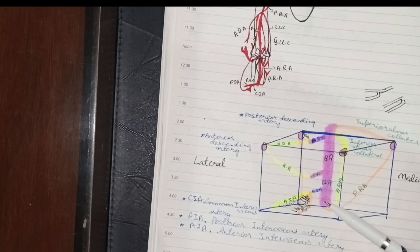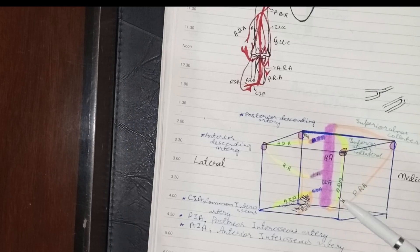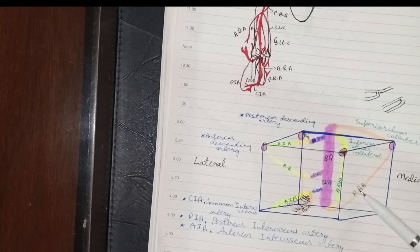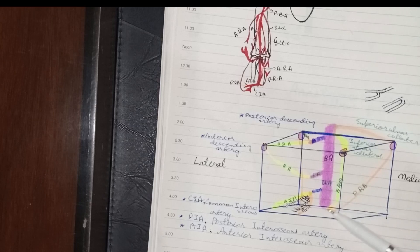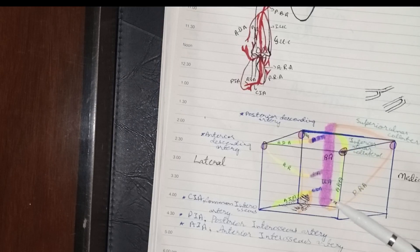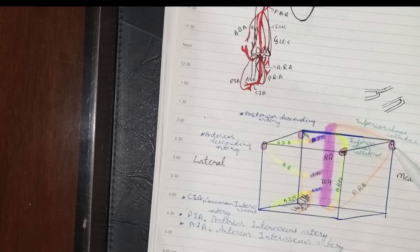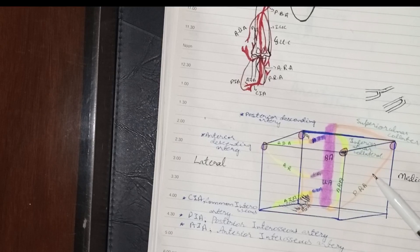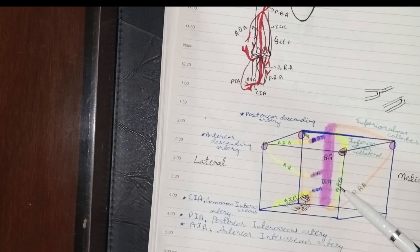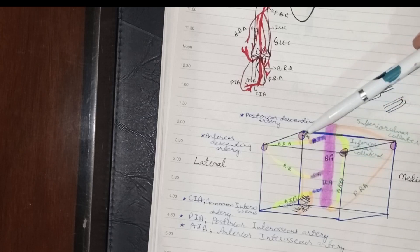The ulnar artery also has two recurrent branches: the anterior ulnar recurrent artery and the posterior ulnar recurrent artery. These recurrent branches will participate in the anastomosis around the elbow joint.